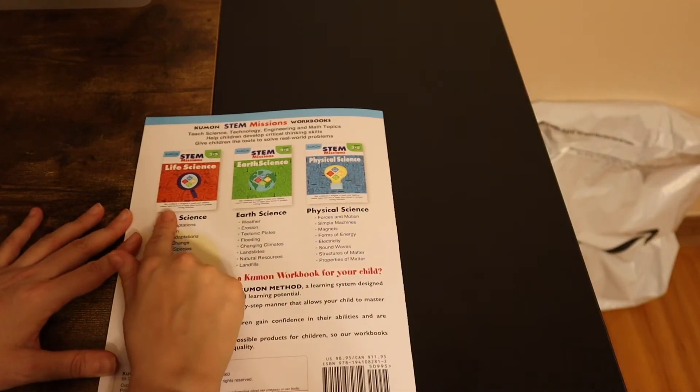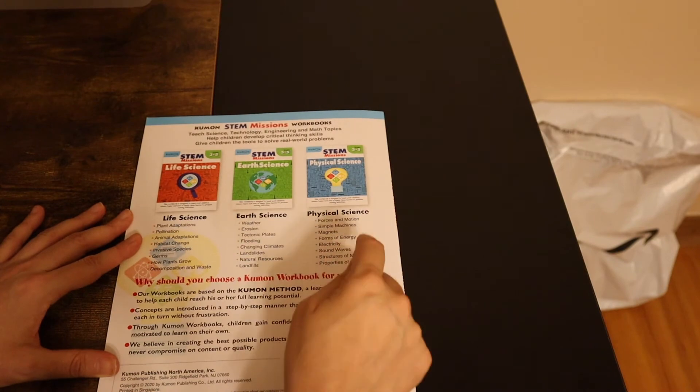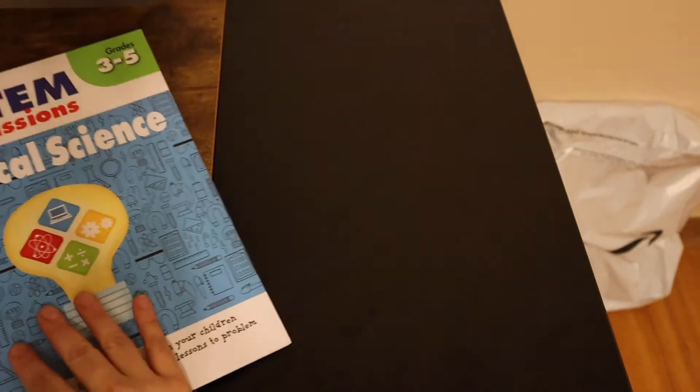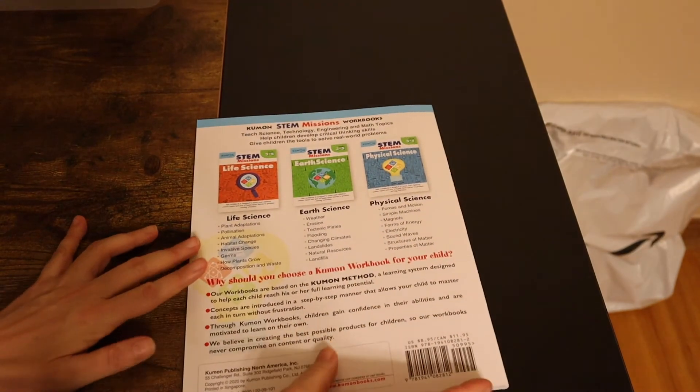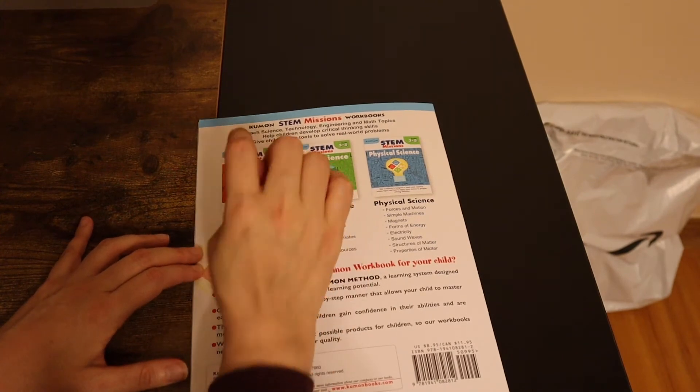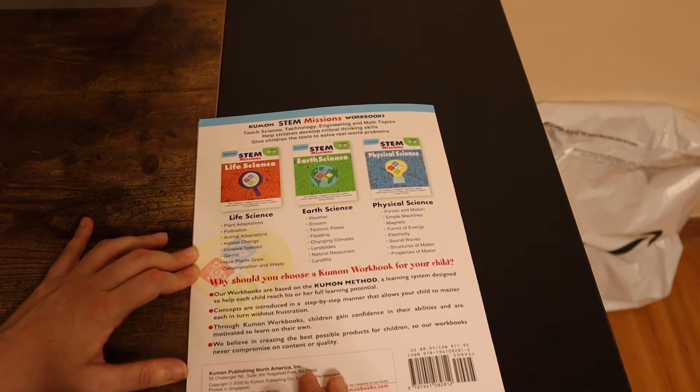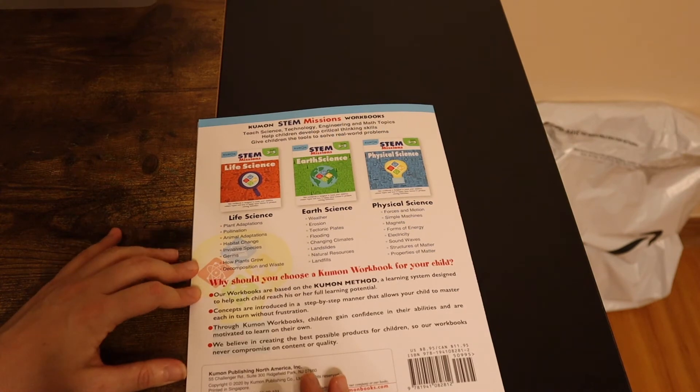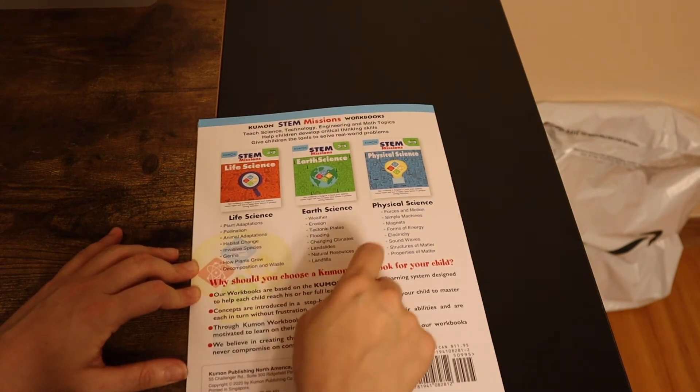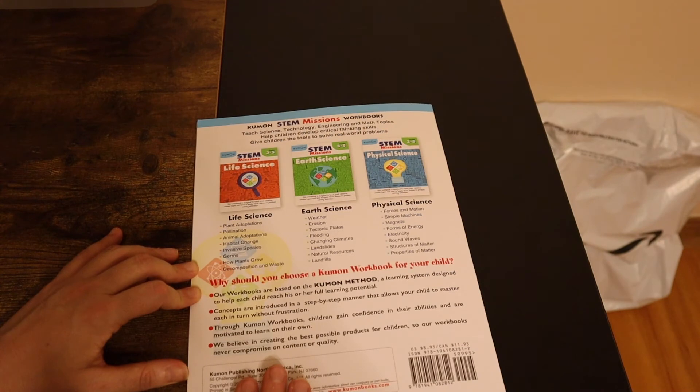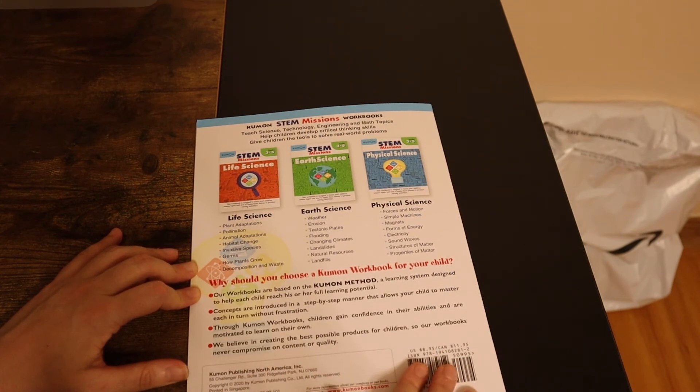Like before, they have the life science, the earth science, and the physical science. We did not get the life science book. Maybe we'll do that for next year. This is just too much for one year right now. And that tells you here what they do cover. And it is not a very expensive book, $8.95 for the book.